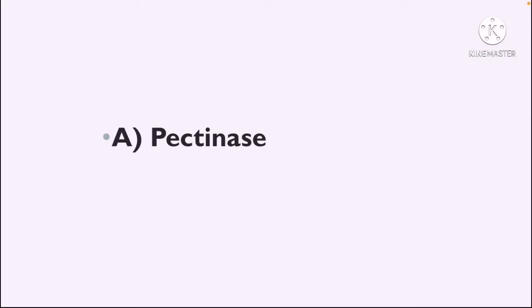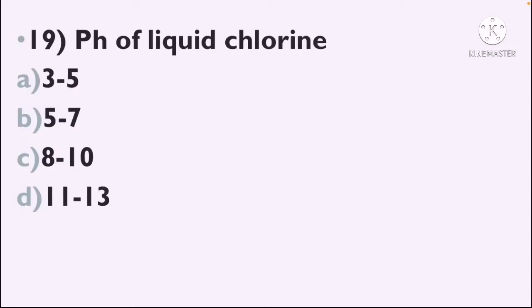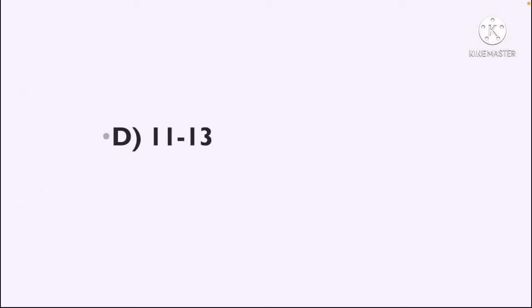Next question: pH of liquid chlorine — Option A: 3 to 5, Option B: 5 to 7, Option C: 8 to 10, Option D: 11 to 13. The correct answer is Option D — 11 to 13 is the pH of liquid chlorine.